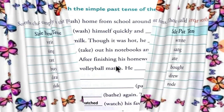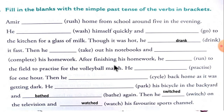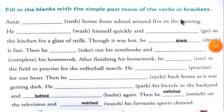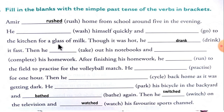Now let's solve the exercise: Fill in the blanks with the simple past tense of the verbs in brackets. Aamir rushed home from school around five in the evening. The correct answer is 'rushed'.